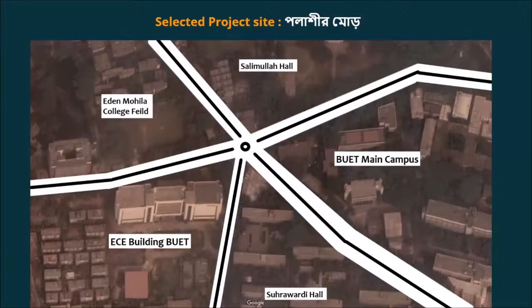For the 5-way intersection, we were given the project site of Polashi's intersection. We have tried to show a top view of what the intersection looks like. As you can see from this figure, we have tried to create a small replica of the roads.